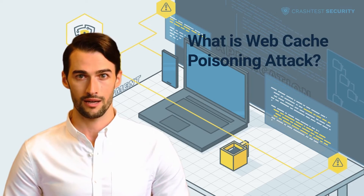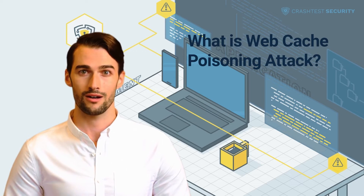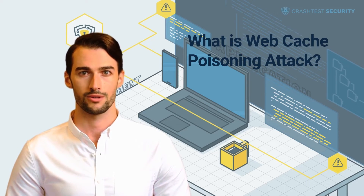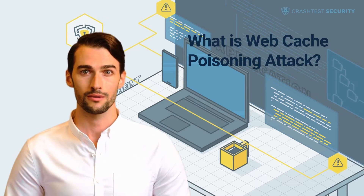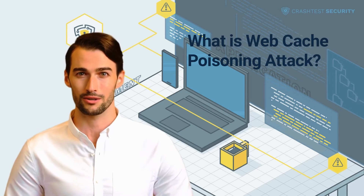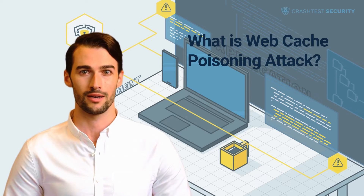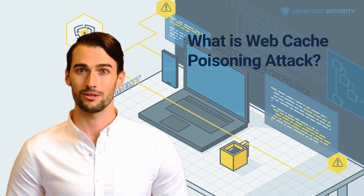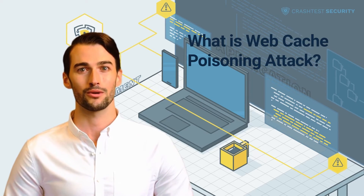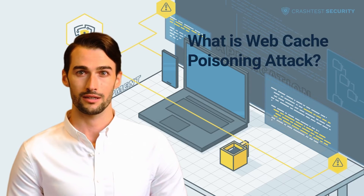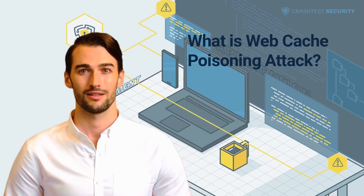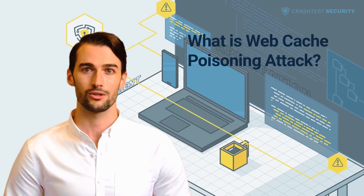To construct a successful web cache poisoning attack, a hacker typically attempts the following steps. First, identification and evaluation of unkeyed inputs. Unkeyed inputs are the parts of a request that the cache ignores while determining whether the resource requested has to be served from the cache. A hacker identifies vulnerable code that injects malicious headers into the HTTP response header field. This vulnerability is exploited to manipulate the unkeyed inputs and utilize these inputs to inject the poisoned response, served to all users whose request for the resource matches with the cache key.